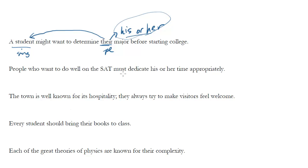People who want to do well on the SAT must dedicate his or her time appropriately. Here again, 'his or her' is singular. What is the noun it's referring to? Who is the person or people who have the time? It's people, which is plural. So actually here we want 'their,' because that's the plural pronoun and it goes with the plural antecedent.